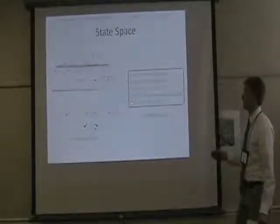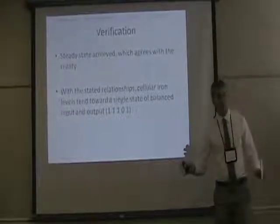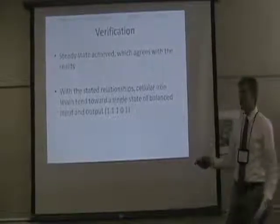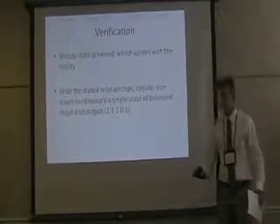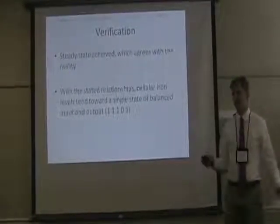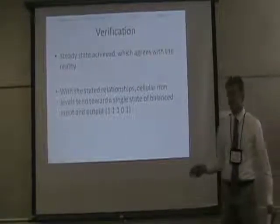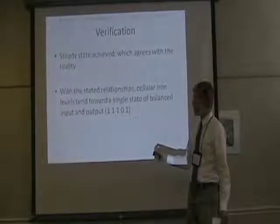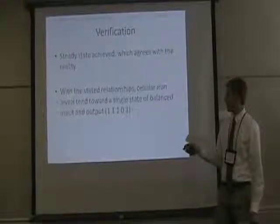To verify the model, we want to make sure it corresponds to reality — that it actually describes what's going on in the cell. We achieved a steady state: iron in the cell tends to a balanced state of input and output, a balanced amount of iron in the cell, which corresponds to reality because in your cells you achieve a balanced iron state. The fixed state is a medium amount of LIP, medium iron export, medium iron import, low storage, and medium IRP — representing regular translation of those proteins.